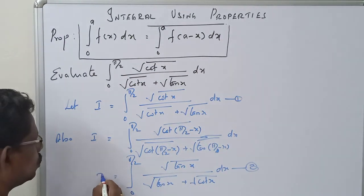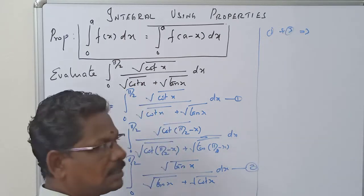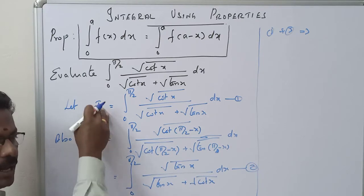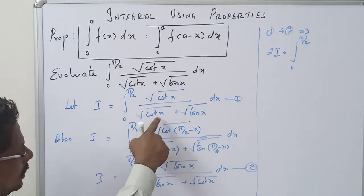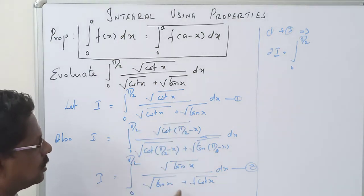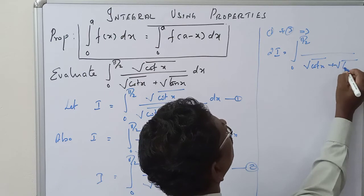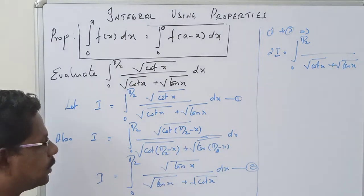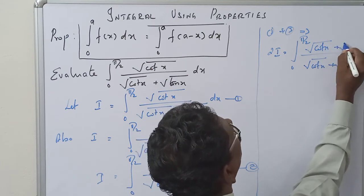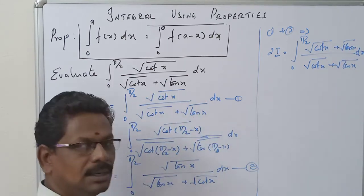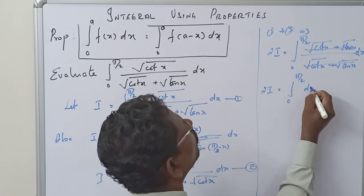Now, I equals equation 1 and also I equals equation 2. Adding these two equations — equation 1 plus equation 2 — the left side gives I plus I, which is 2I. On the right side, the denominators are the same: √(cot x) plus √(tan x). Taking the LCM, the denominator is √(cot x) plus √(tan x), and the numerator becomes √(cot x) plus √(tan x). These cancel, giving 2I equals the integral from 0 to π/2 of dx.